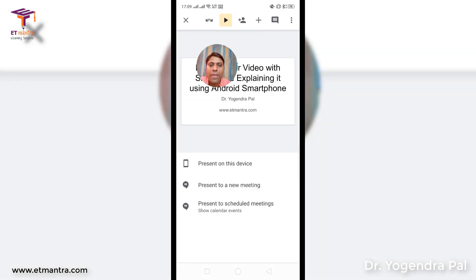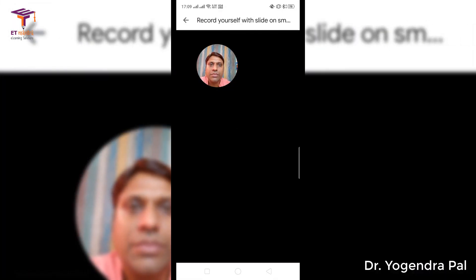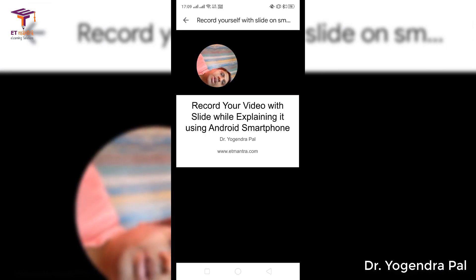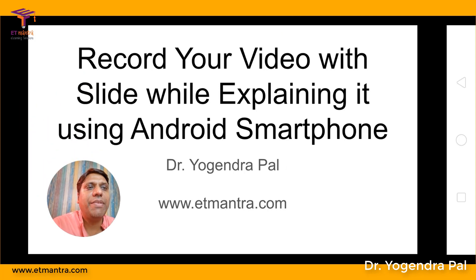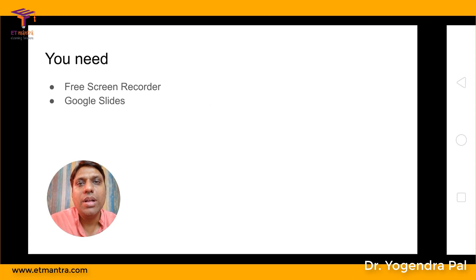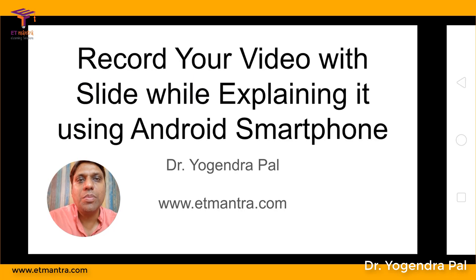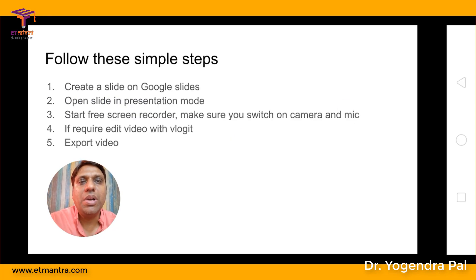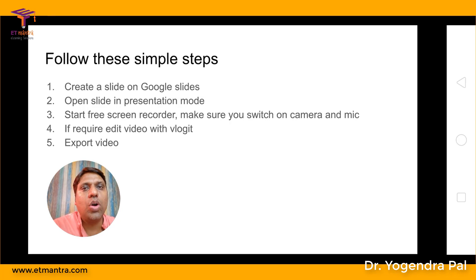I will open the slide in presentation mode — Present on this device — and rotate it. Now when I want to explain a point, for example the first point 'free screen recorder', I simply touch the screen and you can see this white circle. I can do this for the second point as well, anywhere on screen. This is a great option to highlight your screen and it requires no application — it is built into Android by default.